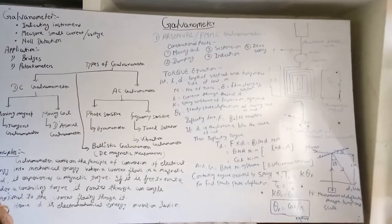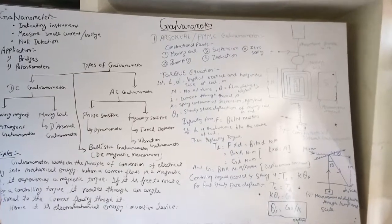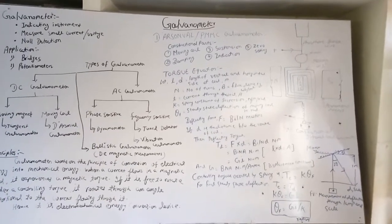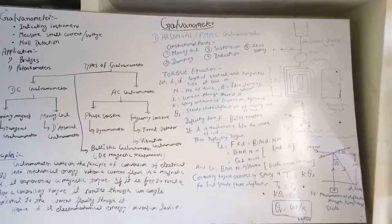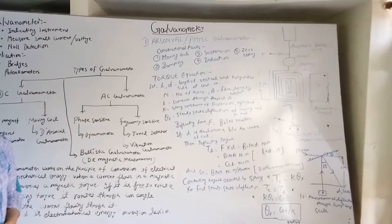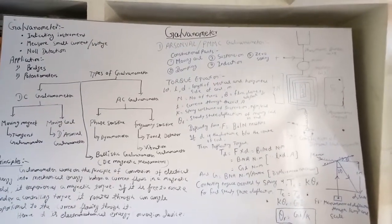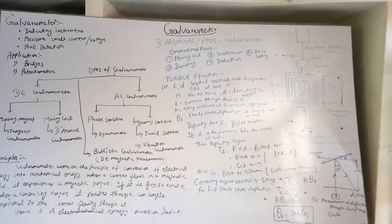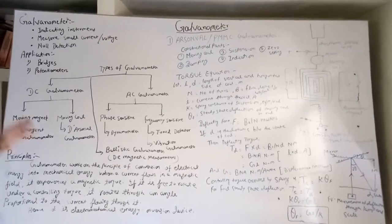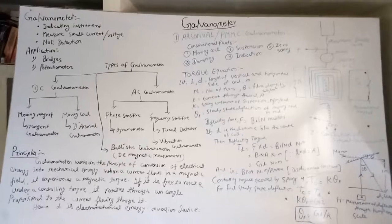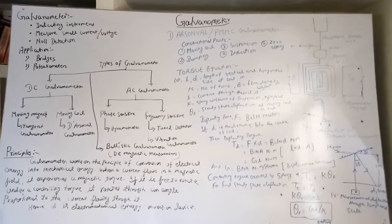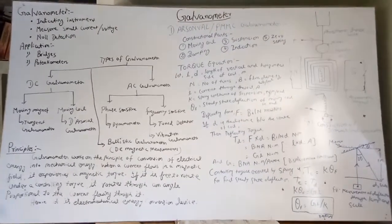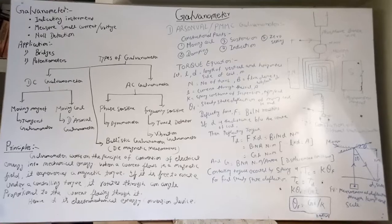Hello students, today we will study about galvanometer. It is lecture 1 of the topic galvanometer. As we know, a galvanometer is an instrument which is used to measure or detect a small amount of current or voltage. It is an indicating instrument and also a null detector, which indicates or shows that no current is flowing through the galvanometer.